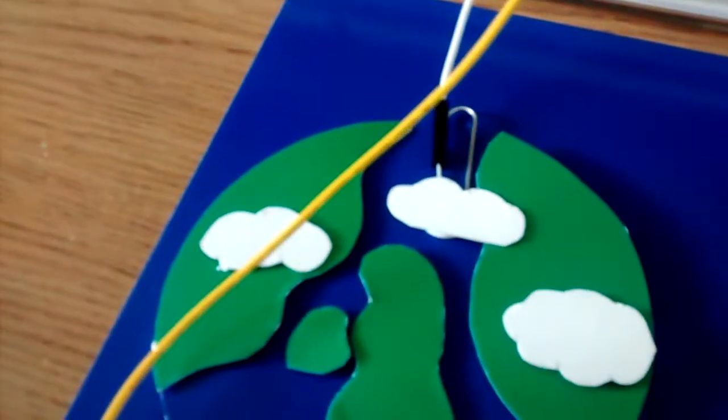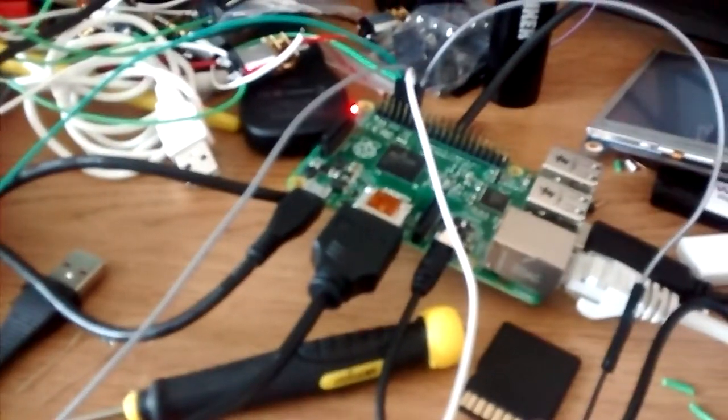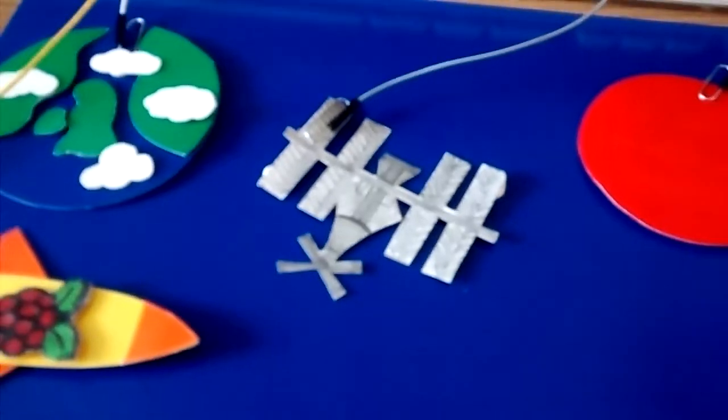We have paper clips on the planets, attached to wires, which snake along my desk, which looks like a rat's nest, to the Raspberry Pi. And we have three of these, one for each object.